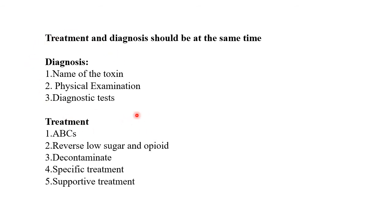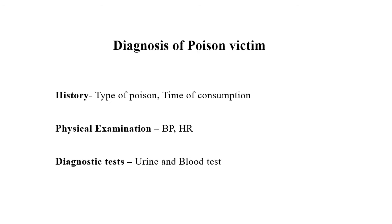For diagnosis, you need: the name of the toxin, physical examination, and diagnostic tests. Treatment includes ABC (Airway, Breathing, Circulation), reversing low blood sugar, opioid reversal, decontamination, and specific and supportive treatment. Physical examination covers blood pressure, heart rate, temperature, and other vital signs. Diagnostic tests include urine and blood analysis.